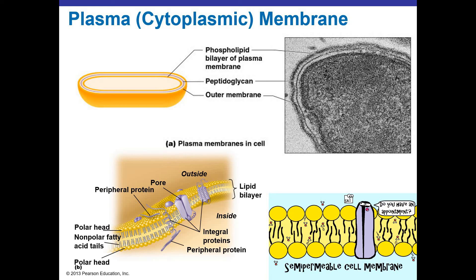Embedded in that phospholipid bilayer membrane are a lot of proteins. Some of these are referred to as integral proteins — they're embedded in the membrane and run completely through it. Other proteins are considered peripheral proteins. They may associate with the integral proteins, be involved in cell signaling, act as receptors, or be in close proximity to things embedded in that membrane.